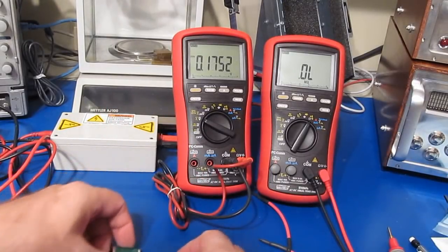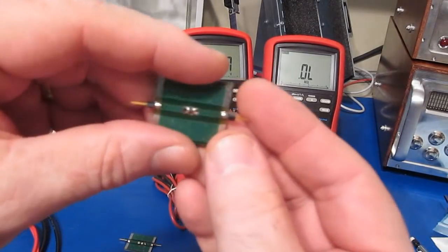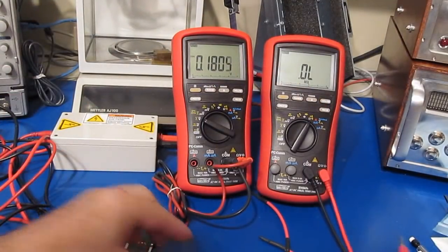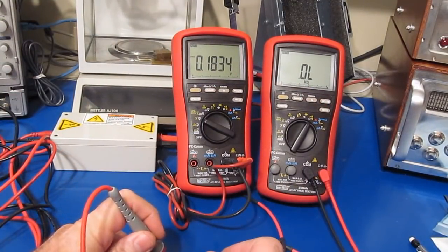I also have some other resistors, these are surface mounted, and again we can see this is a 4.6912 meg. Here's a MELF part and this is a 5 meg, 4.97.